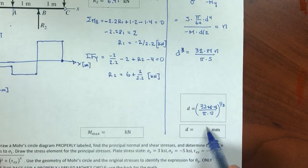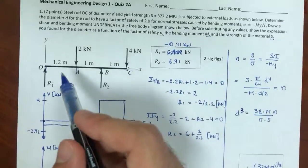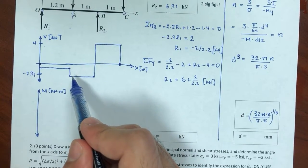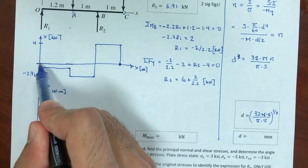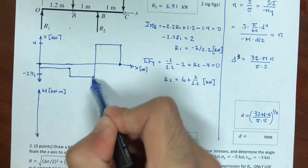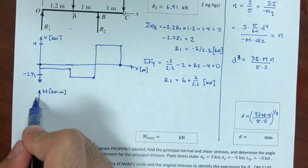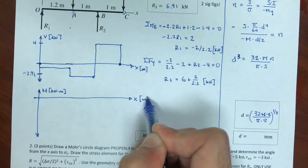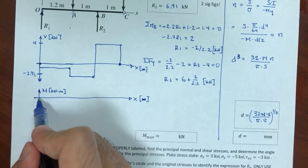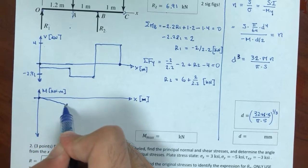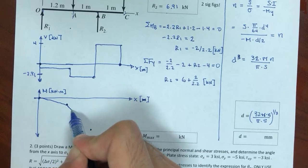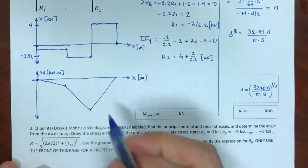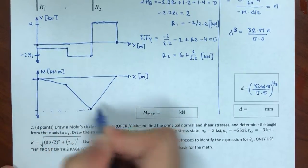There are no external or internal moments at O, A, B, or C, so the moment diagram is just the integral of the shear diagram. Starting at zero, I'll have a negative slope, then a steeper negative slope, then a positive slope back to zero. The moment diagram stays on the negative side of the y-axis throughout.